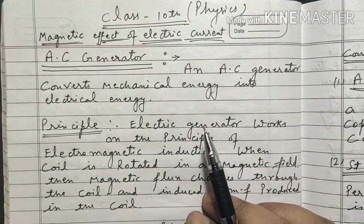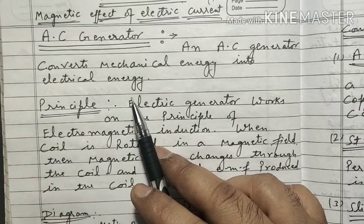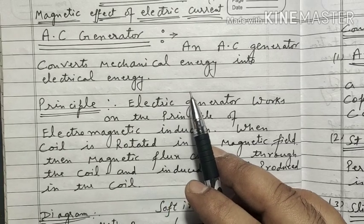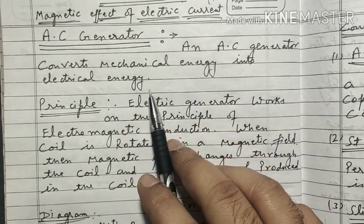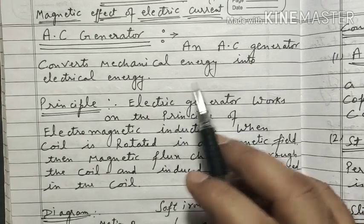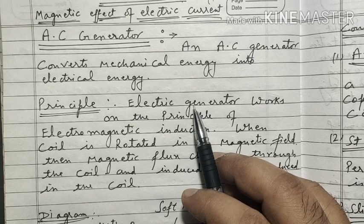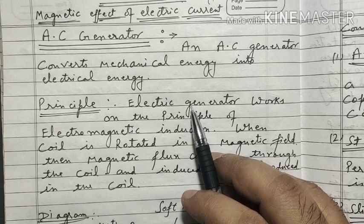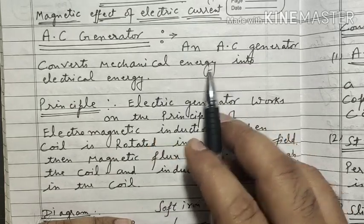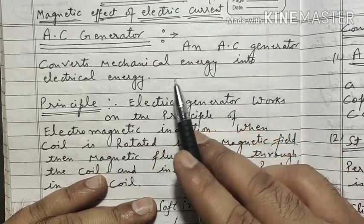So what is AC Generator? AC Generator converts mechanical energy into electrical energy. In a generator, we simply convert mechanical energy into electrical energy. You just have to remember: AC generator converts mechanical energy into electrical energy.